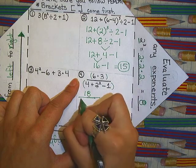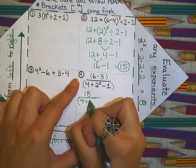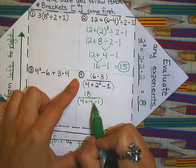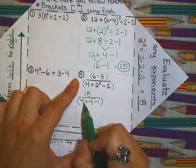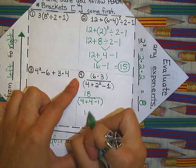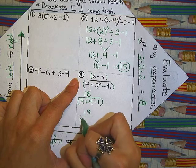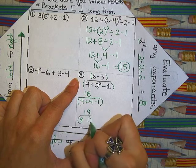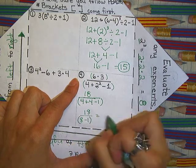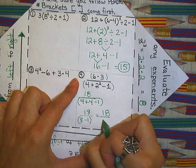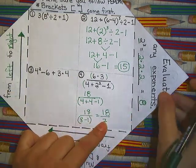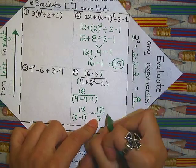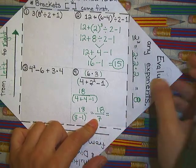So six times three is going to be eighteen. Now what's below we need to follow order of operations. Within my parentheses I do have an exponent here. Two squared is going to be four. Now I have addition and subtraction. Four plus four gives us eight. And eight minus one, that's going to give us seven.